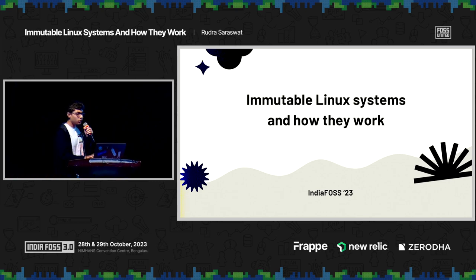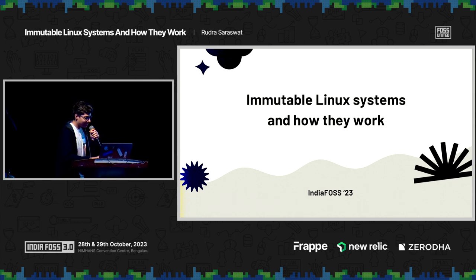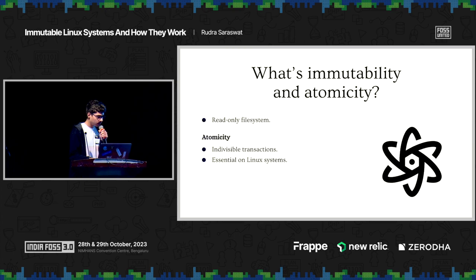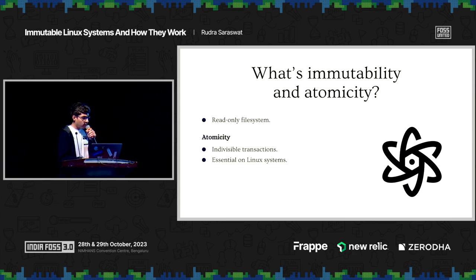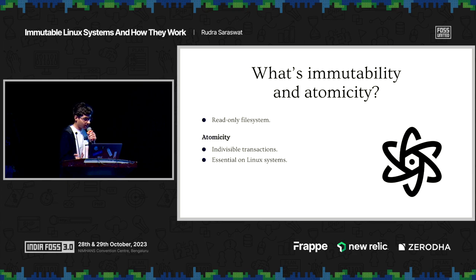In this session, I will be speaking about immutable Linux systems and how they work. To kick it all off, let us discuss what immutability is. An immutable Linux system, in simple terms, is one that has a read-only file system. It is possible to use such a system as a daily driver without the advent of containerized applications in the last decade.